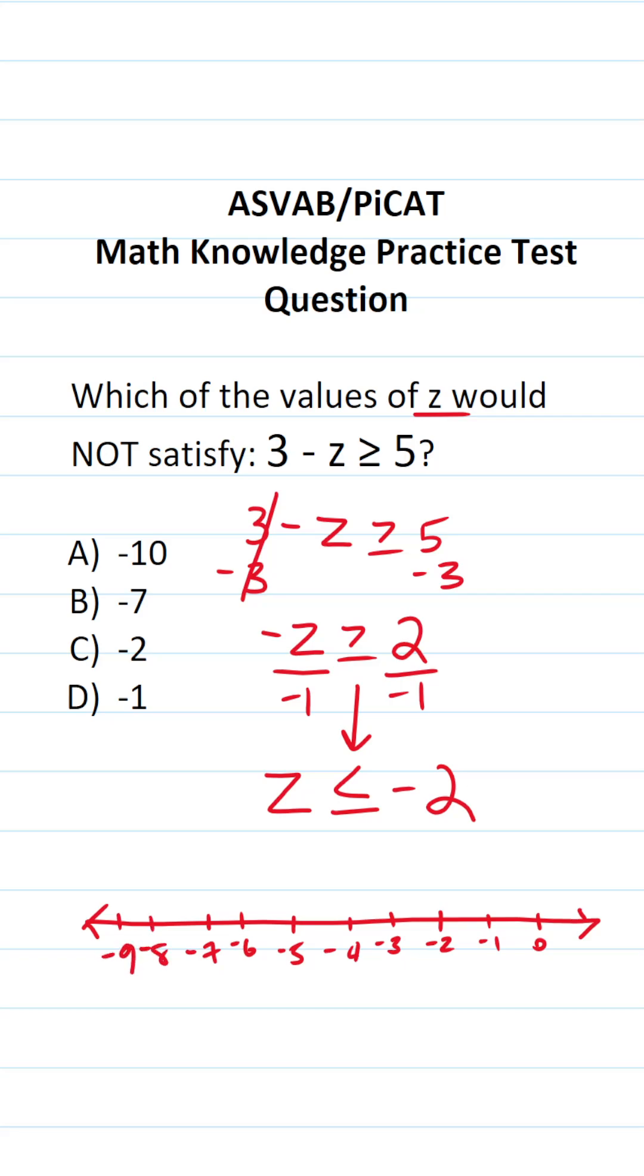We're going to go to negative 2, and since we have a less than or equal to sign, we're going to put a closed circle above negative 2, because negative 2 is included in our solution set. z is all the values that are less than or equal to negative 2, so it's going to be all these values over here.